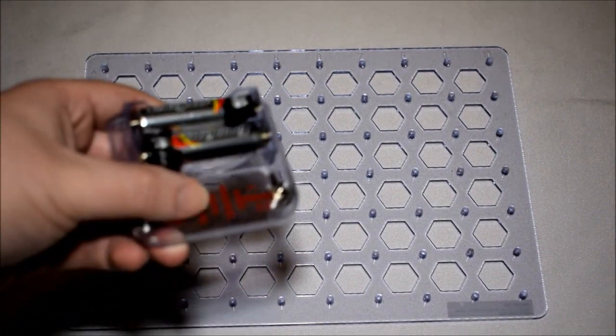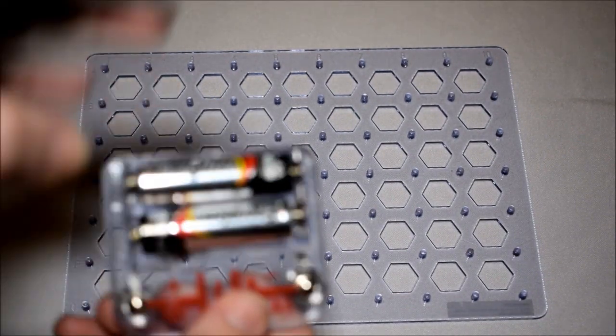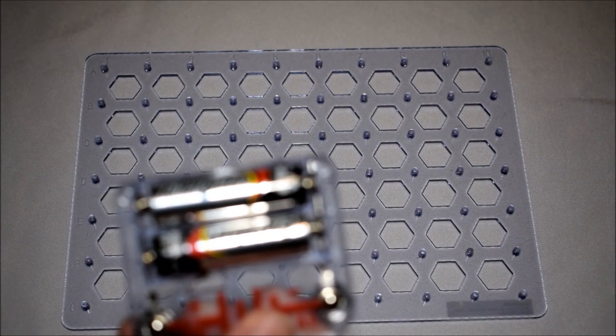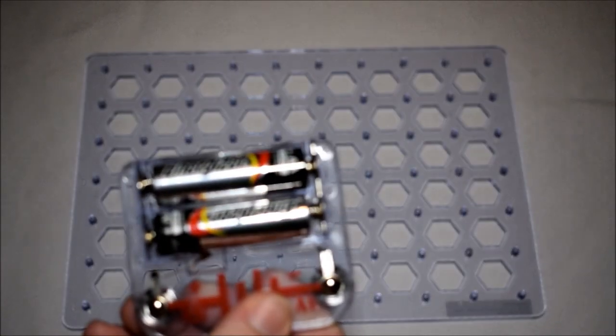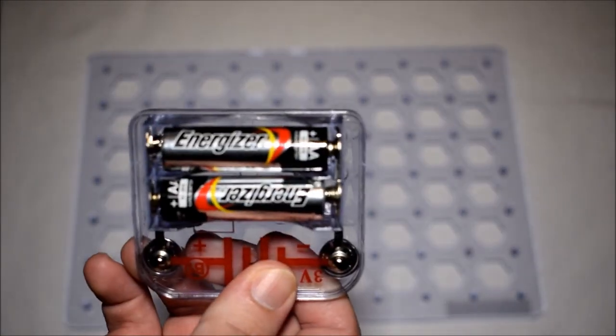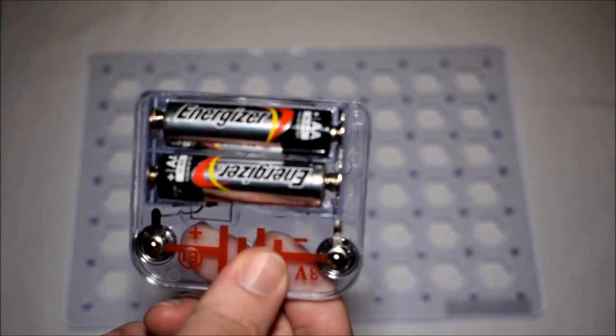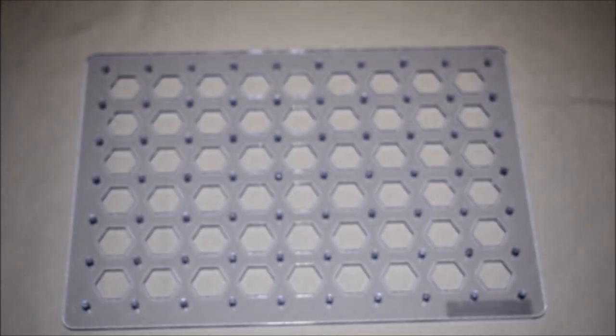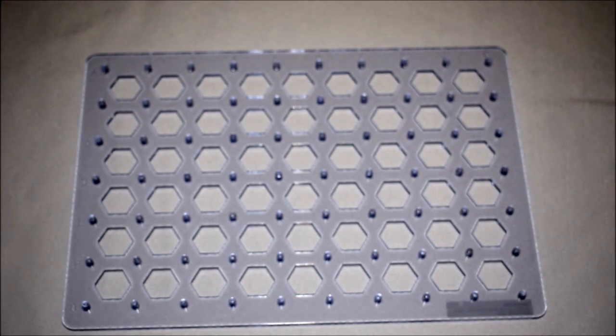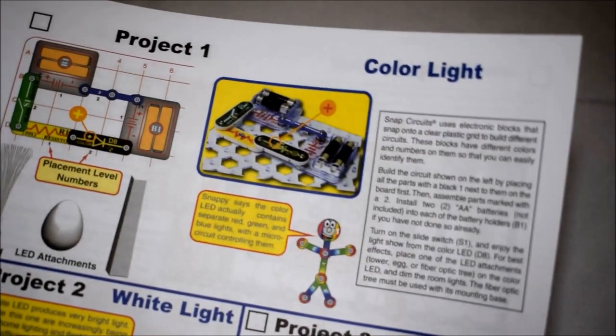I thought I'd actually show myself putting this together since it's pretty quick. One thing I didn't mention is you need to have some AA batteries. You'll need to have four of them. They go into these little dealies here. In this one I'm just gonna do project one. It's called color light.